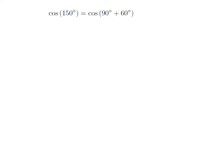As 150 degrees is equal to 90 degrees plus 60 degrees, so cosine of 150 degrees is equal to cosine of 90 degrees plus 60 degrees.